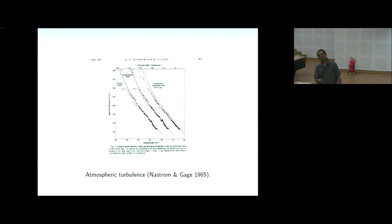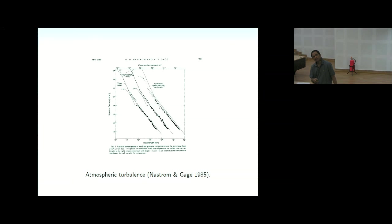The key observation: from about 5,000 km down to roughly 500 km the spectrum scales approximately as k^{-3} — a very steep spectrum. Below about 500 km the spectrum becomes shallower, close to k^{-5/3}, continuing down to perhaps 50 km. The same behavior is seen in both wind components and in temperature.